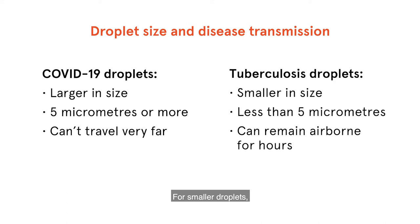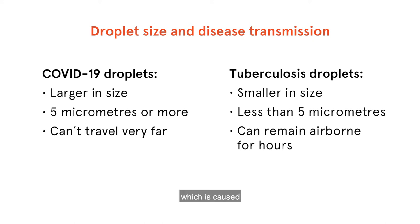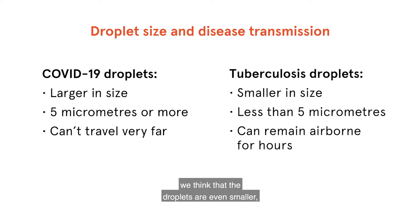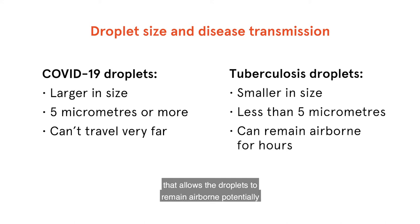For smaller droplets, such as for transmission of tuberculosis — caused by the bacterium Mycobacterium tuberculosis — we think the droplets are even smaller, less than five micrometers. If they're very small, that allows the droplets to remain airborne potentially for hours and to transmit.